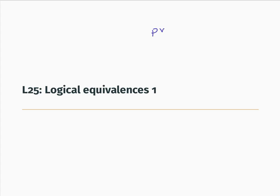Consider the two well-formed formulas P or Q and Q or P. Those are different well-formed formulas, because a well-formed formula is just a sequence of symbols, and those are different sequences of symbols — they've got P and Q in different orders. But they do have an interesting logical property, which is that given any truth assignment to P and Q, that truth assignment gives these two well-formed formulas the same truth value.